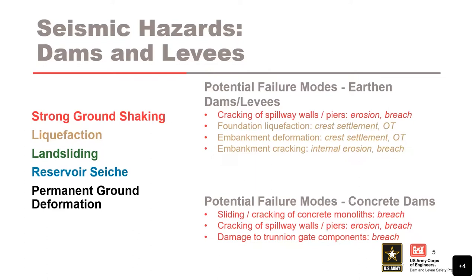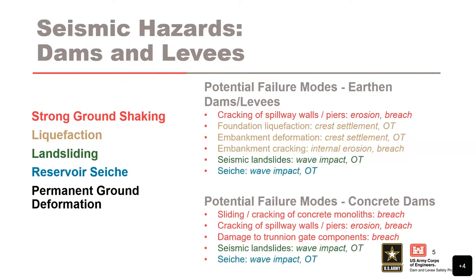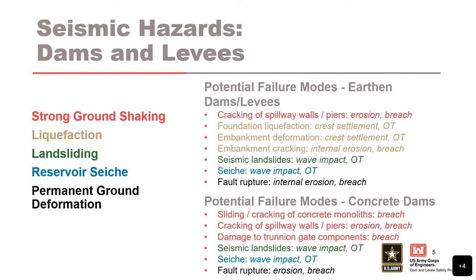Landsliding into water can generate a wave inducing overtopping. Reservoir seiche — a wave set up from substratum motions — can also induce overtopping, though it's very rare. Fault rupture through an earthen embankment or concrete dam creates internal erosion and connectivity between reservoir water and downstream. Only two dams in the world have ever been mitigated for fault rupture: Matahina in Colombia and Isabella Dam in Southern California.